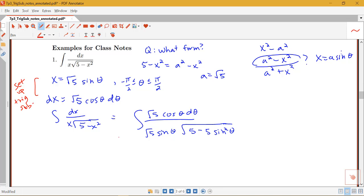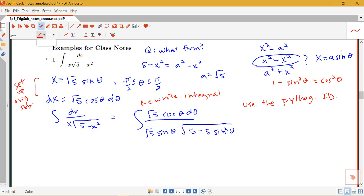And we rewrite the integral. And now we're going to look for using the identity. And there will always be some appropriate Pythagorean identity for us to use. In this case, we're going to want to use 1 minus sine squared theta equals cosine squared theta. So let's look at what we have inside of our problem here. So I have this 5 minus 5 sine squared theta.